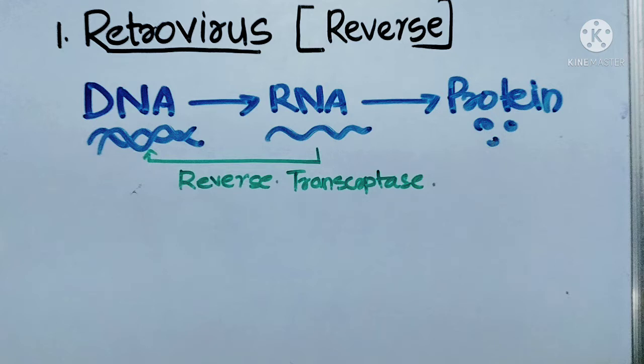Our virus is an RNA virus. In retroviruses, RNA is converted to DNA — that is the reverse action. That is why the name is retrovirus: RNA-to-DNA is the reverse condition. This reverse conversion is carried out by a particular enzyme called reverse transcriptase, which helps convert RNA into DNA.